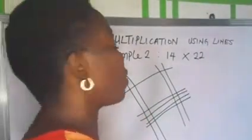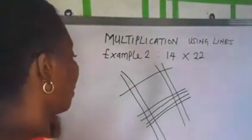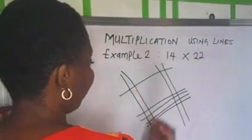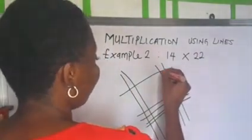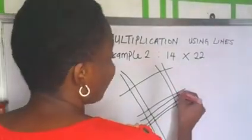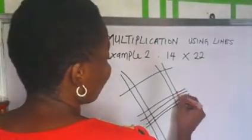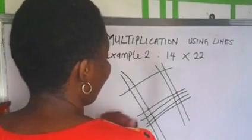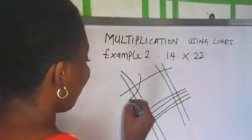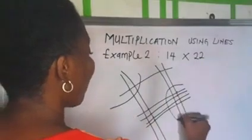Alright then, let us look for the point of intersection that gives us a dot. We have another one here. We have another dot. We have a dot. We pick from here. We pick here.